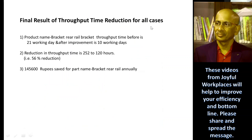The final result of throughput time reduction: for the product named Bracket Rear Rail Bracket, throughput time before was 21 working days and after improvement it reduced to 10 working days. I'm sure it can be reduced further to around 5 days. The reduction in throughput time is 52 to 152 hours — a 56% reduction — and the annual saving is ₹1,45,600.